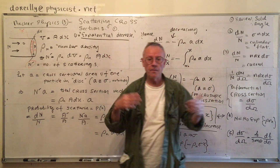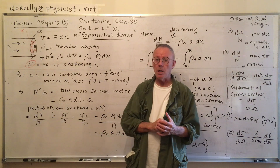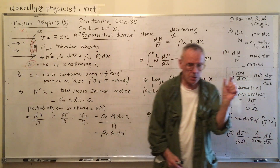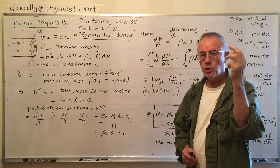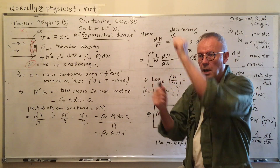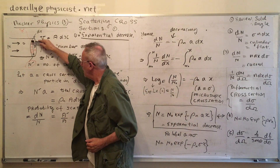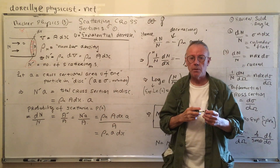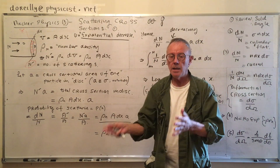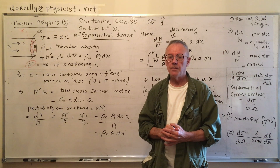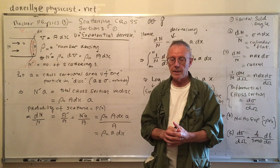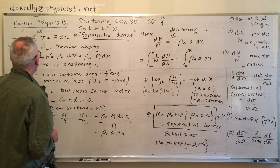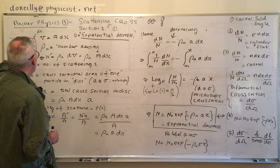The big N coming in is the number of particles in the beam — a beam of particles impinging on a disk which has a certain number of scattering particles. One scattering particle has a microscopic cross-sectional area of a (or sigma). Two scattering particles make an area of 2a. If there are 10 scattering particles each of cross-sectional area a, then 10a is the total scattering cross-section area. The volume of the disk is A·dx.